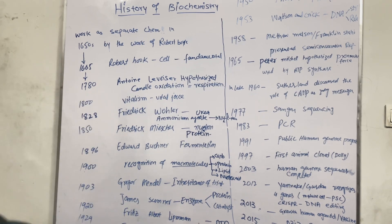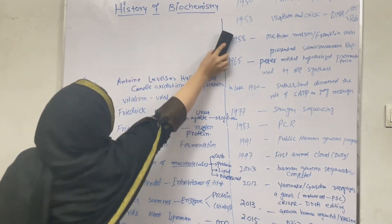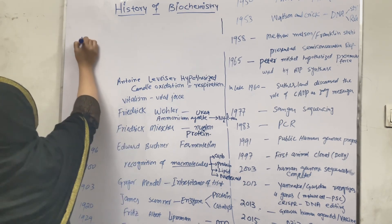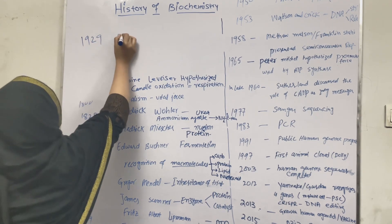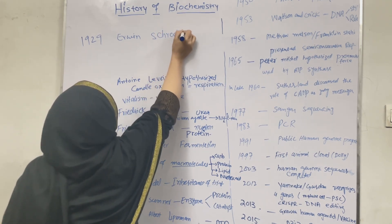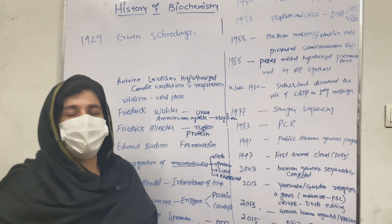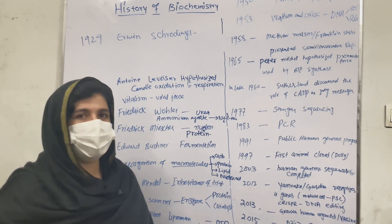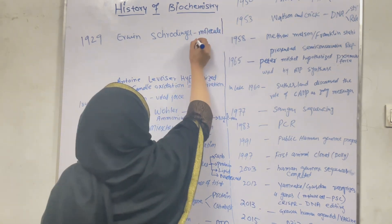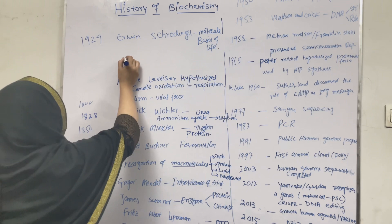In 1929, Erwin Schrödinger gave the molecular basis of life and wrote a book titled 'What is Life?', discussing the molecular basis of life. He was awarded a Nobel Prize for this work.